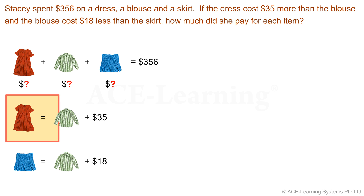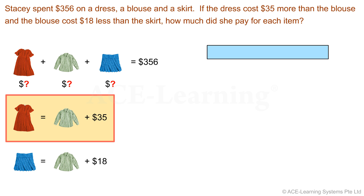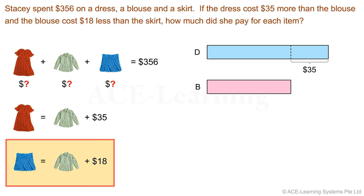From our diagram, we can see clearly that the cost of the dress, when compared with the cost of the blouse, is $35 more. So we're going to draw a unit that is longer for the dress, and a shorter one for the blouse. This unit represents the cost of the dress — let's use D to stand for dress. Now we draw a unit slightly shorter to represent the cost of the blouse — let's use B. The difference is $35. The cost of the skirt is $18 more than the blouse, so we draw a longer unit for the skirt — let's use S — and the difference is $18.